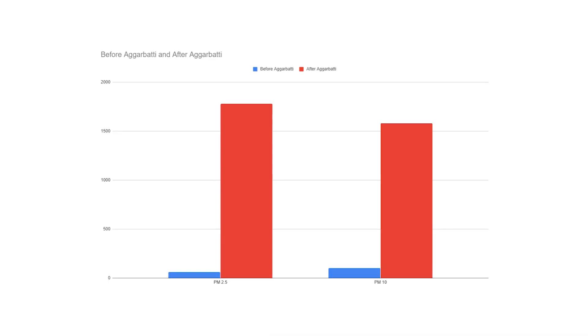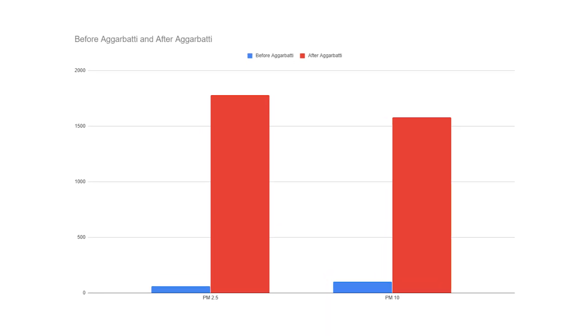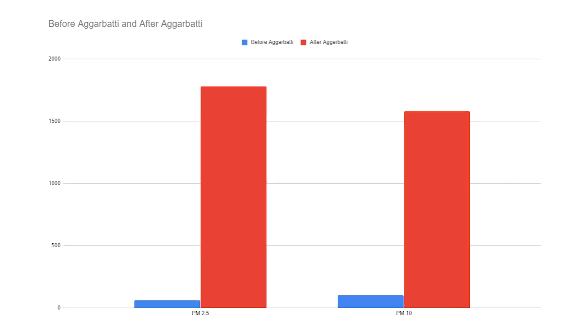Another reason for indoor air pollution includes aromatics, chemicals, and charcoal. A research was carried out where they put one incense stick in a single room with one window. In that room, the PM2.5 level was 60 and PM10 level was 100. When the incense was lit, PM2.5 jumped to 1779.7 micrograms and PM10 level was 1579. From one incense stick, the indoor pollution increased 15 times.